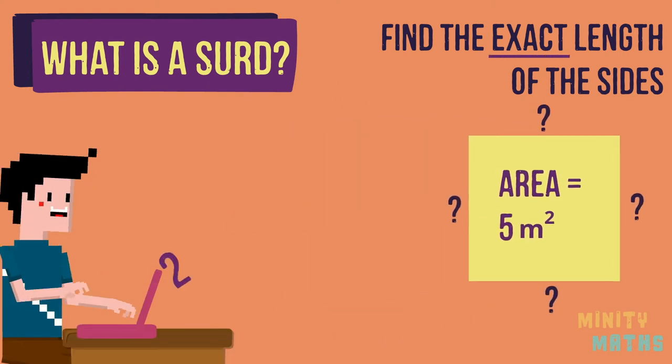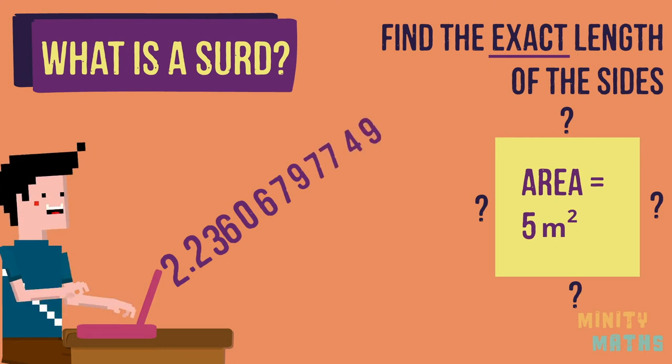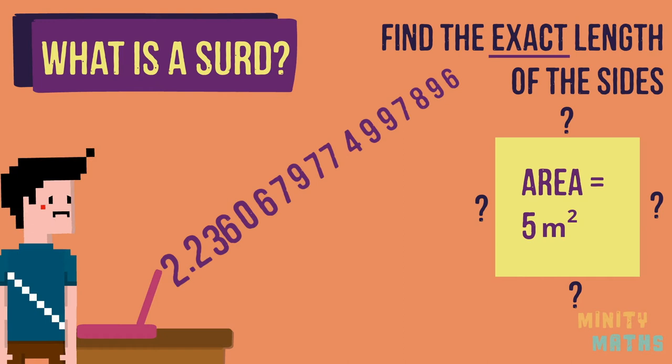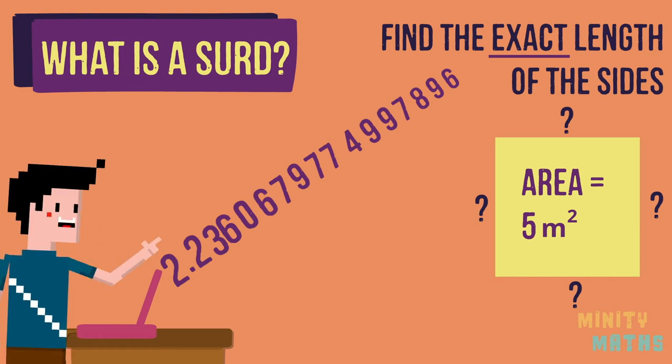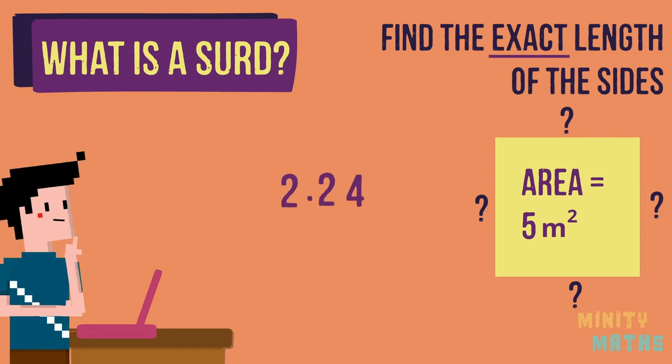Well it is practically impossible to write the exact length out using a decimal number as you would be writing the number out for the rest of your life and then you still wouldn't have finished it. You could round the number to two decimal places or even to a whole number but then this won't be an exact answer to the question.